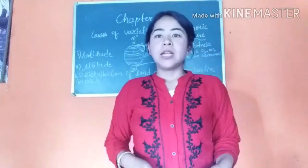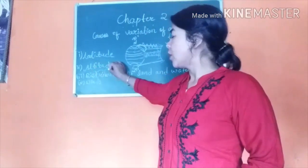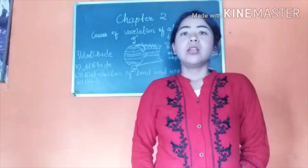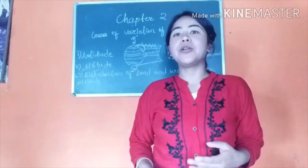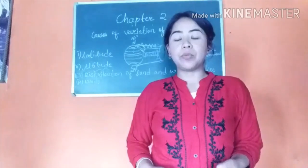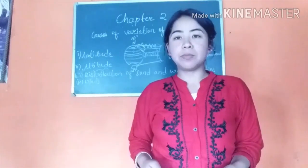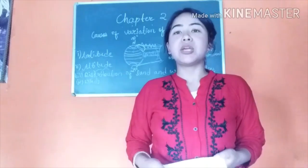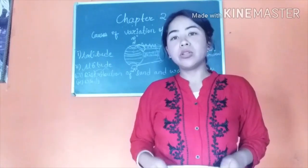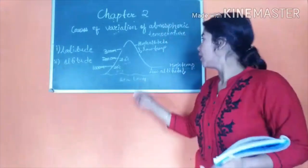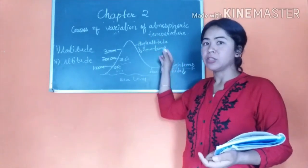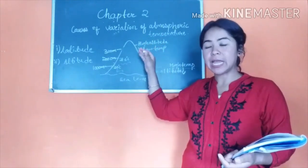The next factor which affects the temperature of a place is altitude, which refers to the height of a place. As we go to higher places, the temperature of that place becomes lower — so temperature decreases with height. There is an inverse relationship between the height of a place and its temperature: the higher the altitude, the lower the temperature, and the lower the altitude, the higher the temperature.